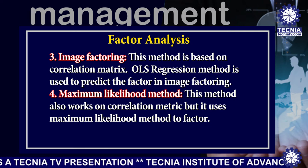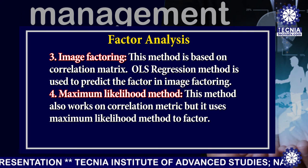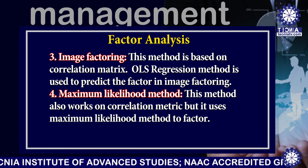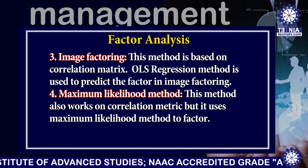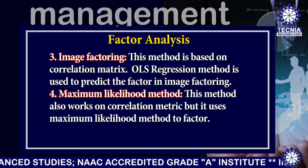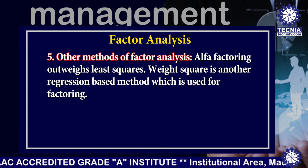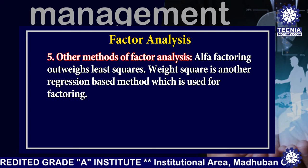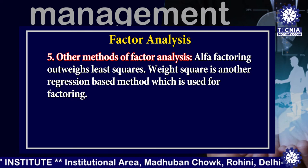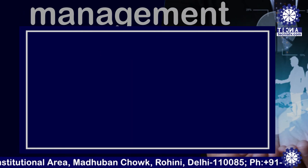The fourth one is the maximum likelihood method. This method also works on a correlation matrix but it uses the maximum likelihood method to factor. The fifth one includes other methods of factor analysis: alpha factoring outweighs least squares, and weighted squares is another regression-based method used for factoring.